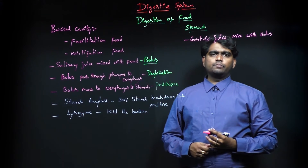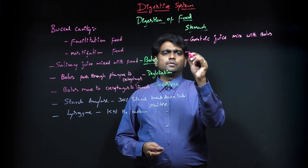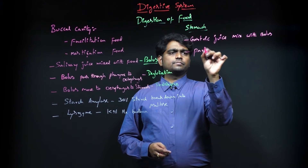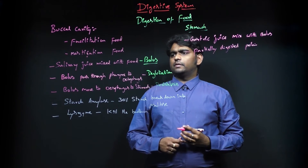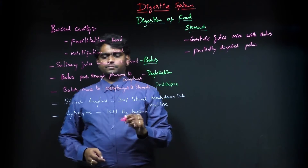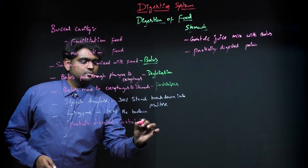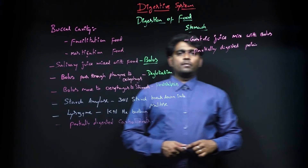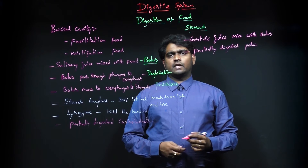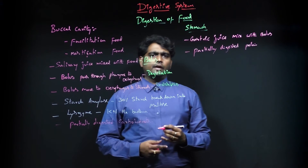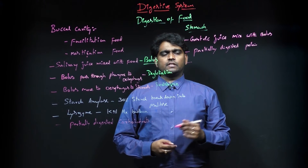The stomach also has peristalsis movements. In the buccal cavity, carbohydrates are partially digested, while in the stomach, proteins are majorly partially digested. The gastric juice mainly contains pepsinogen, which is the important composition of gastric juice.